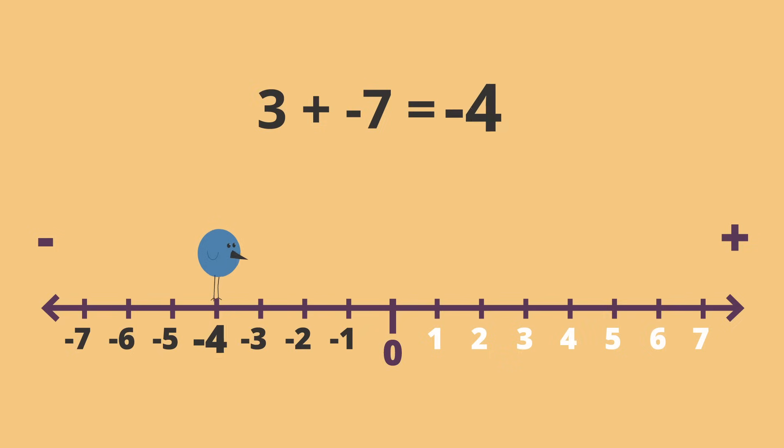Since he landed at negative 4, that's our answer. 3 plus negative 7 equals negative 4.